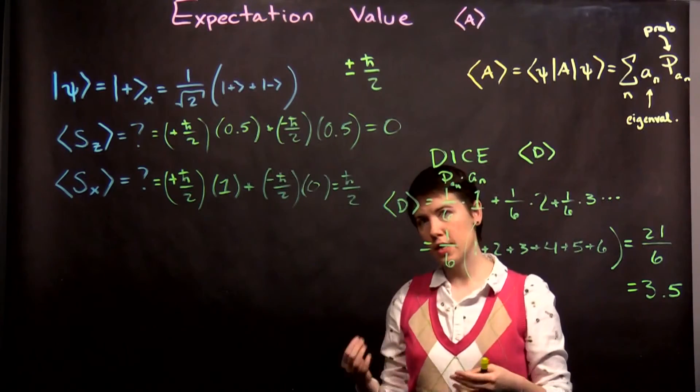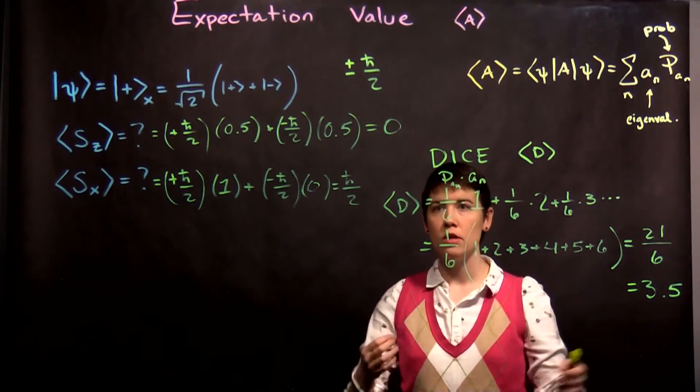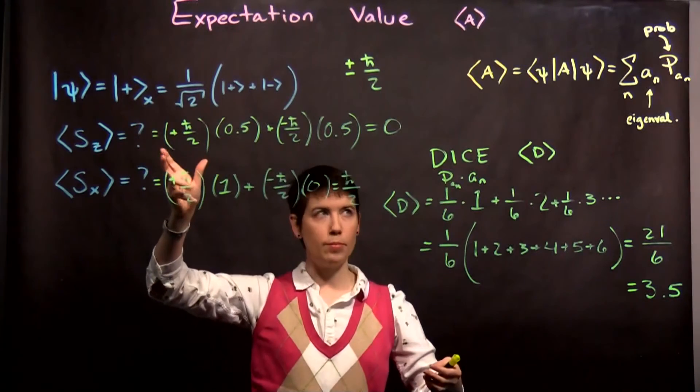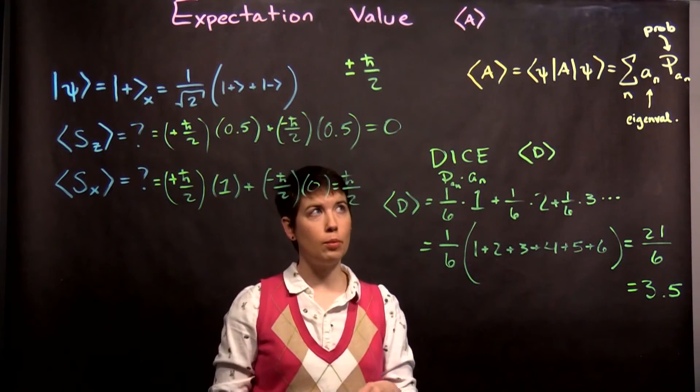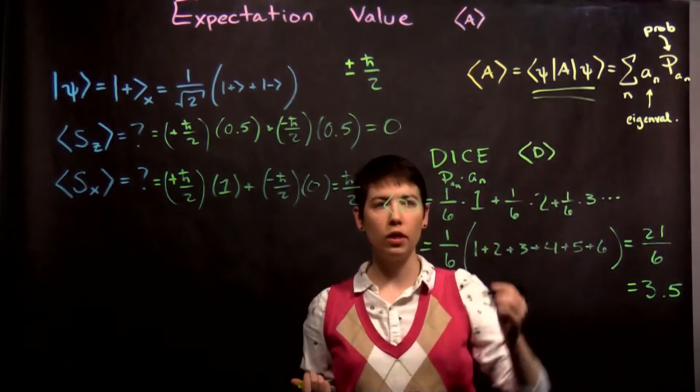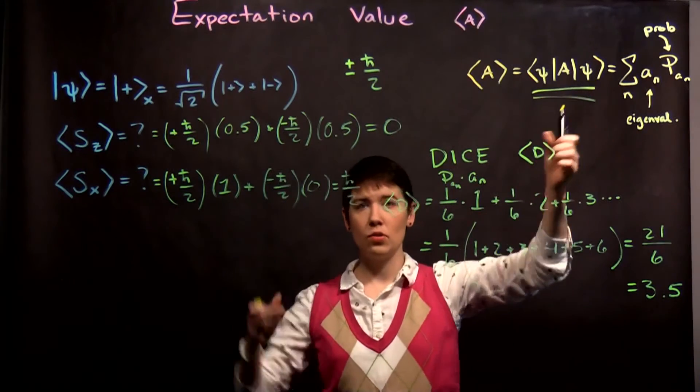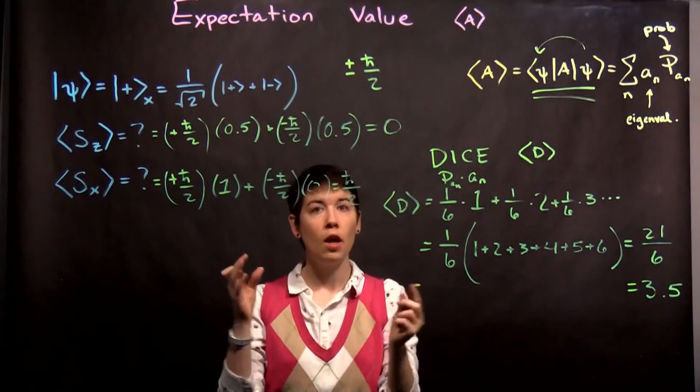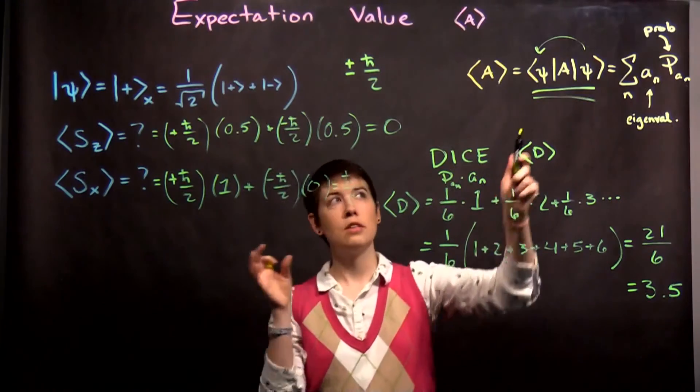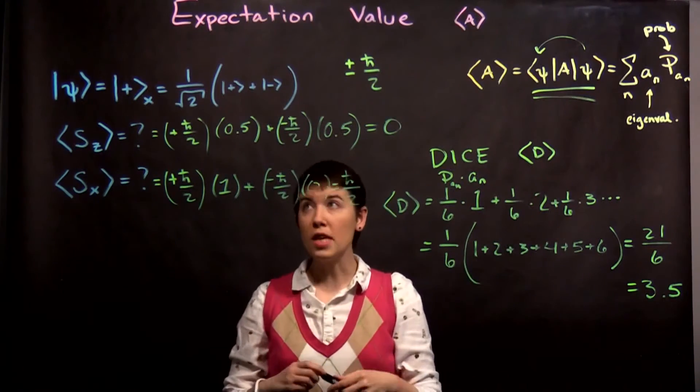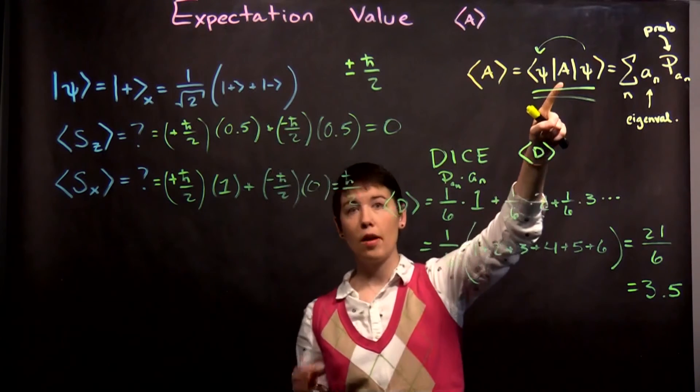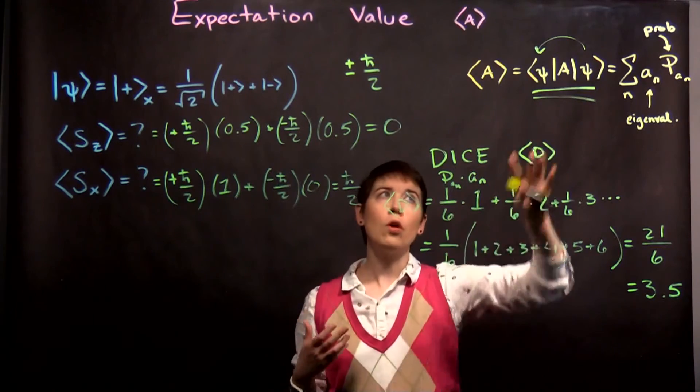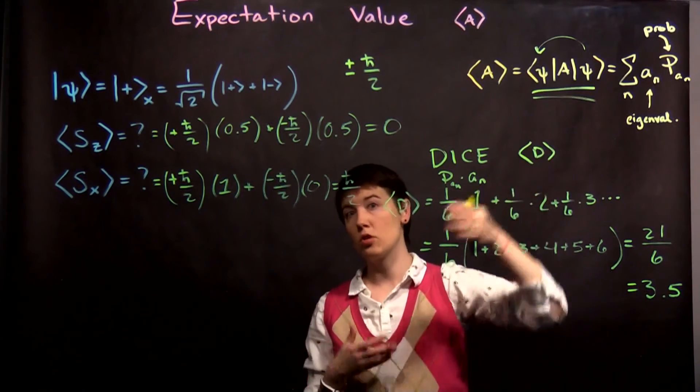Now, if you haven't already calculated what the probabilities are - in the case of rolling a die, I know what the probabilities are. Spin x at this point, I know what the probabilities are. But if you haven't calculated the probabilities, there's kind of a shortcut you can use. That is, you take whatever your state is, and you transform your ket to the bra. Remember, complex conjugate and transpose. And then you sandwich your operator in between that state as a bra and that state as a ket.